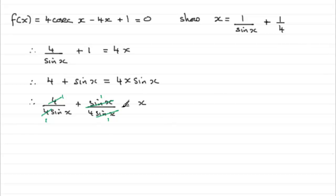leaving me with x equals what we want, which is going to be 1 divided by sin x, and then plus 1 over 4, 1 quarter.